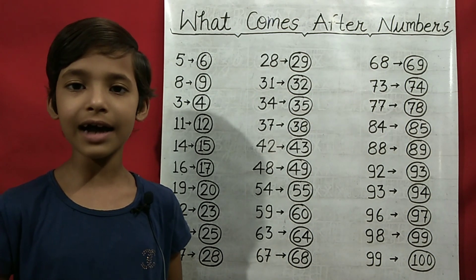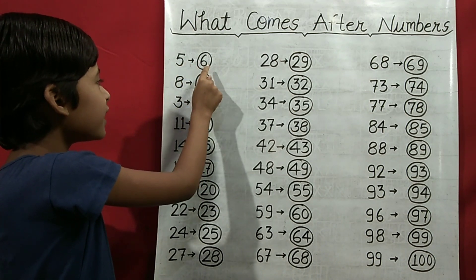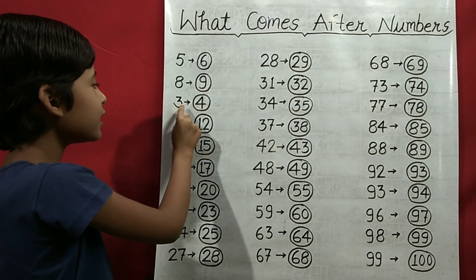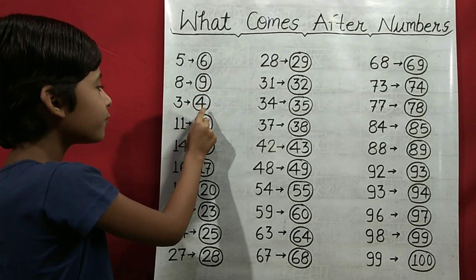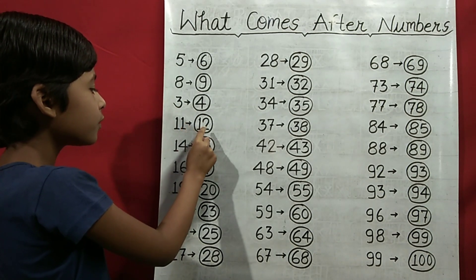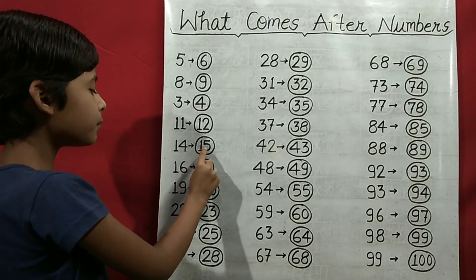Let's start. 5 comes after 6, 8 comes after 9, 3 comes after 4, 11 comes after 12, 14 comes after 15.